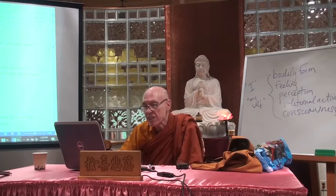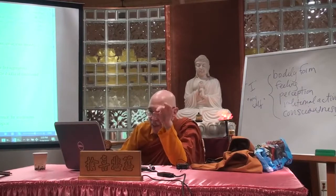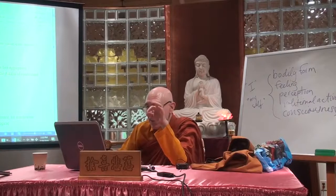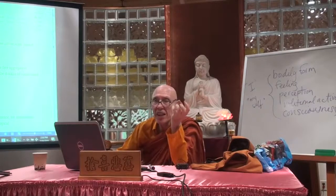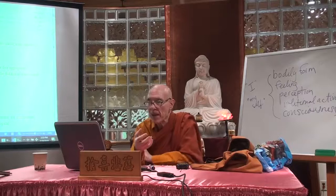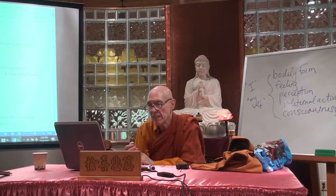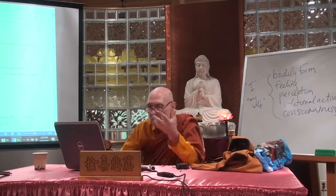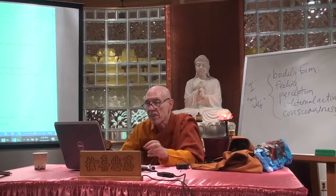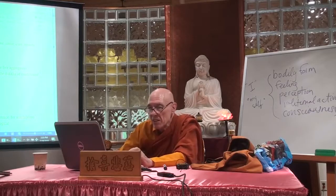Another way in which the texts analyze the first noble truth is by speaking about three levels of dukkha. One is what we could call ordinary suffering — bodily pain, pain that comes from illness, the ordinary aches and pains of the body. This is obvious, clear, ordinary suffering — bodily and mental suffering.